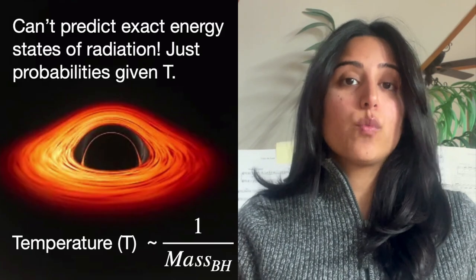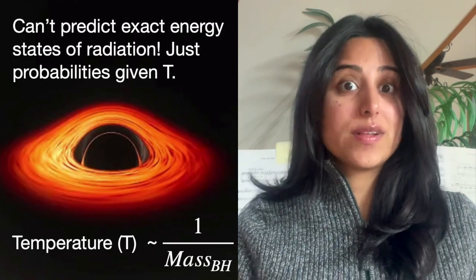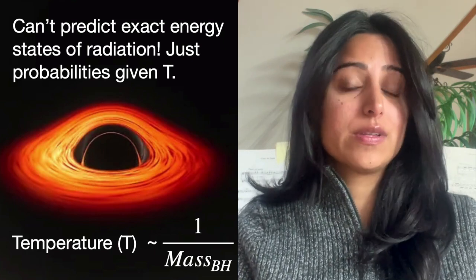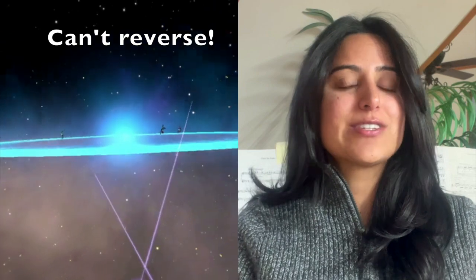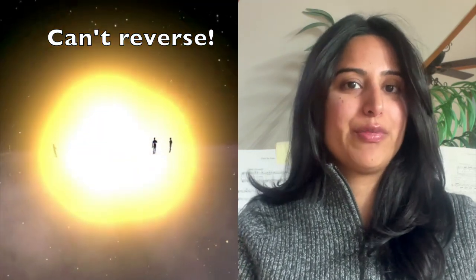Hawking teaches us that we can't actually predict what state the radiation is going to be in once a black hole is gone. And more than that, we can't even reverse the film to figure out what formed the black hole in the first place.